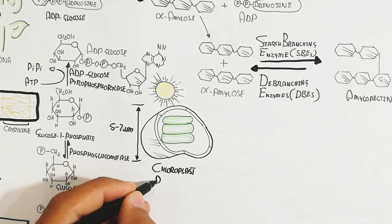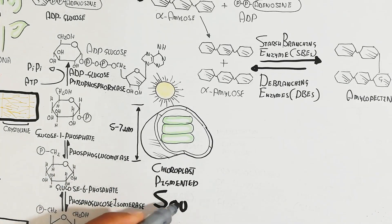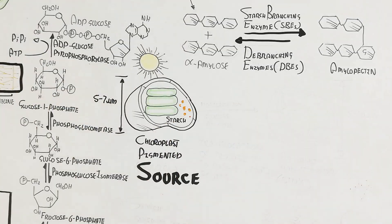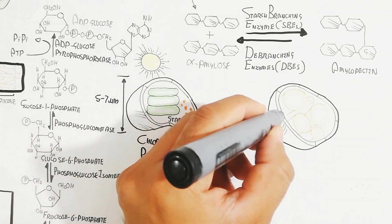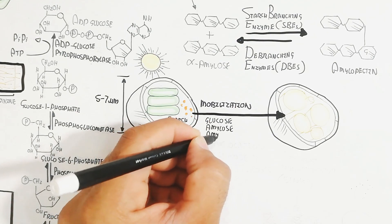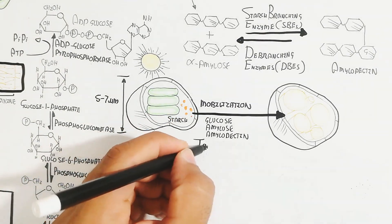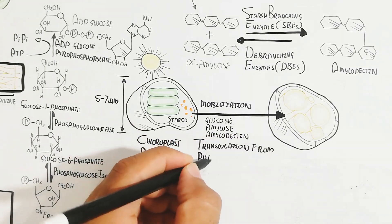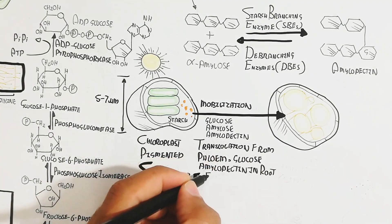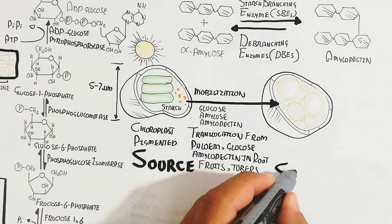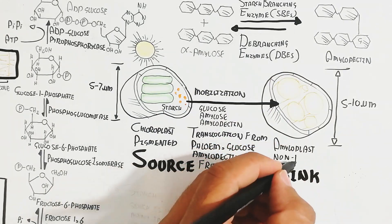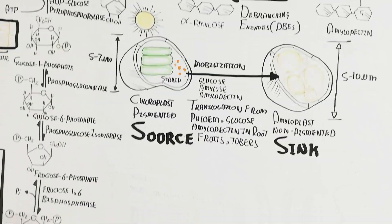The chloroplast is 5 to 7 micrometers in diameter and is a pigmented organelle — the source for glucose and starch production. Starch can be partially stored and then mobilized into leucoplasts or amyloplasts. Amyloplasts are non-pigmented organelles present in potato tubers, roots, and fruits. Translocation of glucose and amylopectin occurs to these storage organs, depositing starch into amyloplasts, which are 5 to 10 micrometers in diameter.